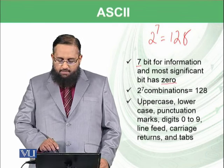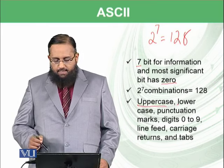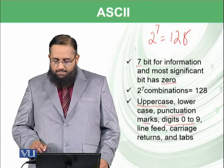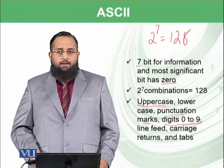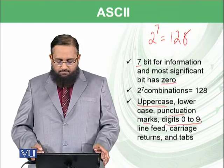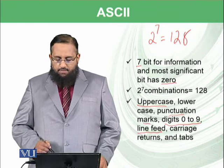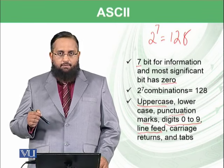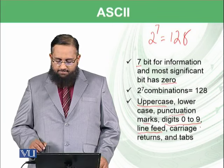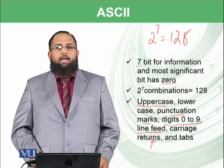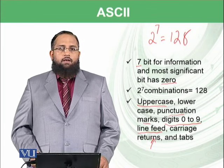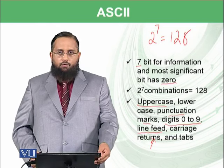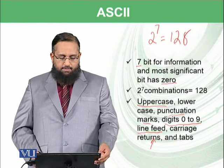This means 128 different kinds of symbols could be represented, as there are 128 different bit patterns. Those 128 symbols include uppercase alphabets, lowercase alphabets, punctuation marks, digits from 0 to 9, line feed, carriage return, and tabs. Line feed means a next-line symbol is inserted; carriage return means the cursor returns to the start of the line. Tab is also available on your keyboard.